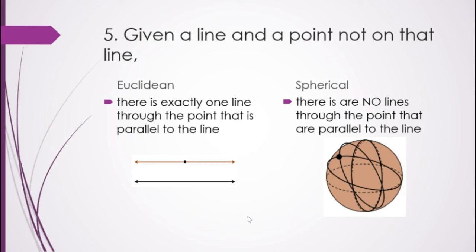Now, we're going to talk about ways that they're not the same. The first one has to do with parallel lines. If we have, in Euclidean geometry, a line and a point that's not on the line, there's just one parallel line that goes through that point.